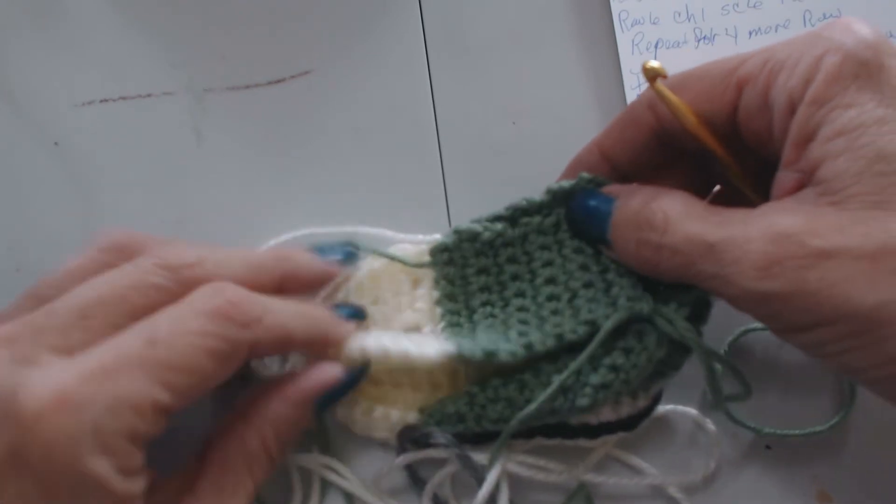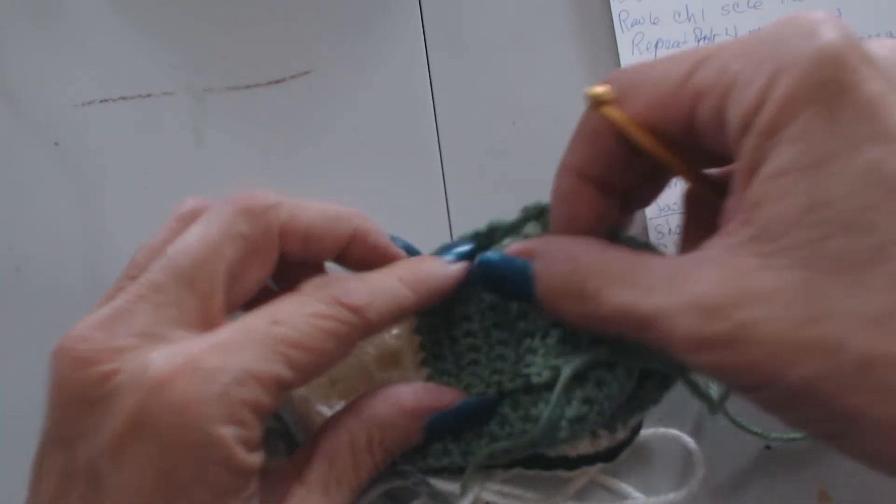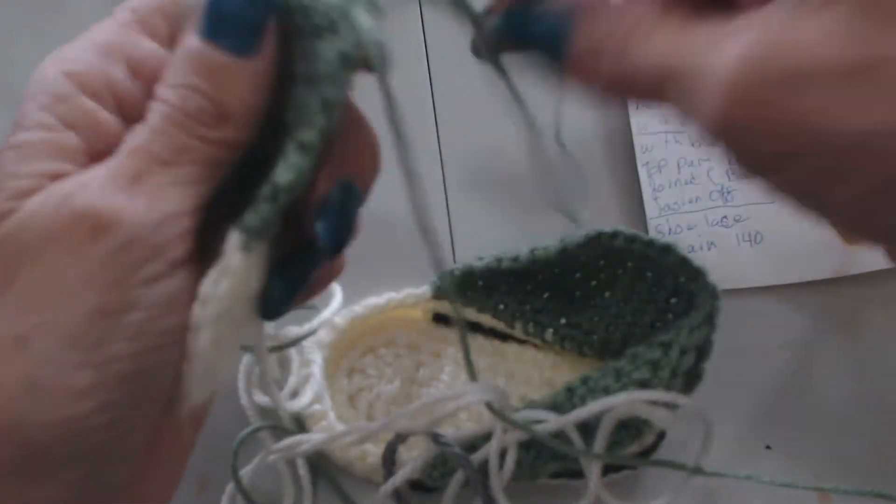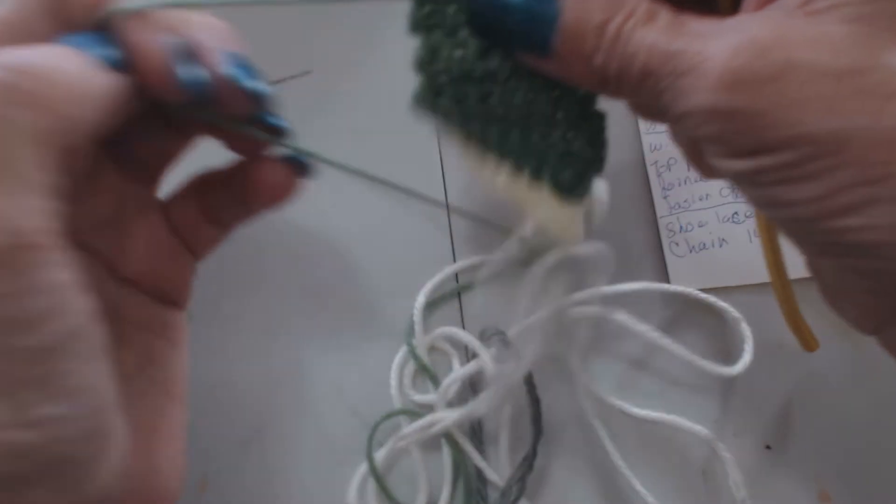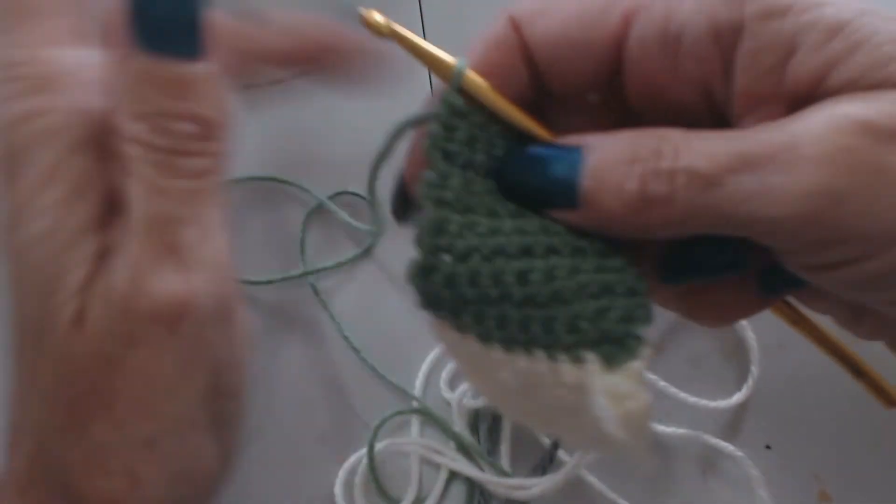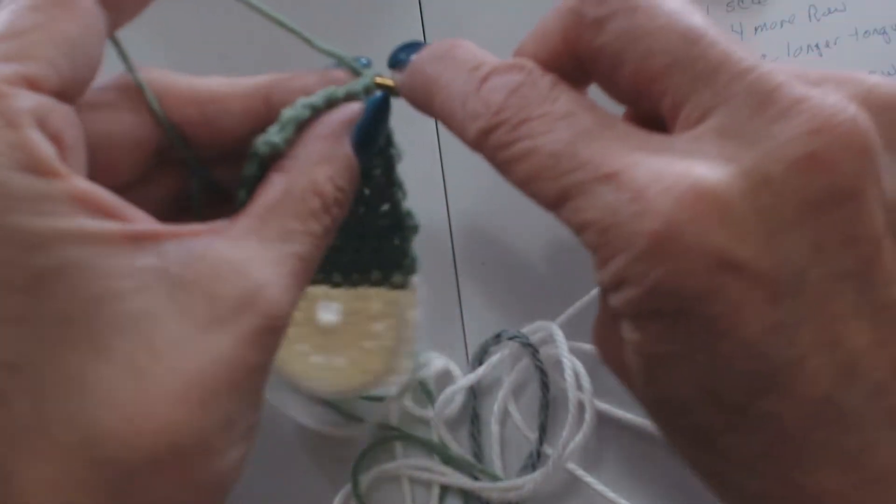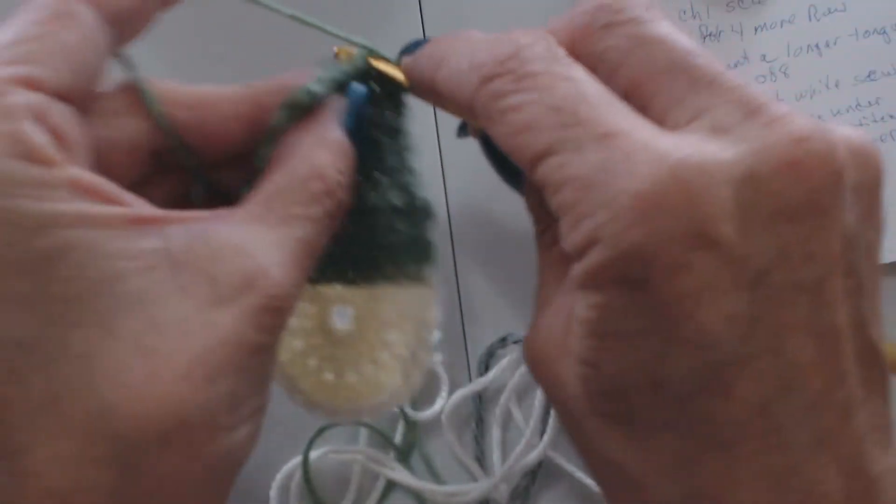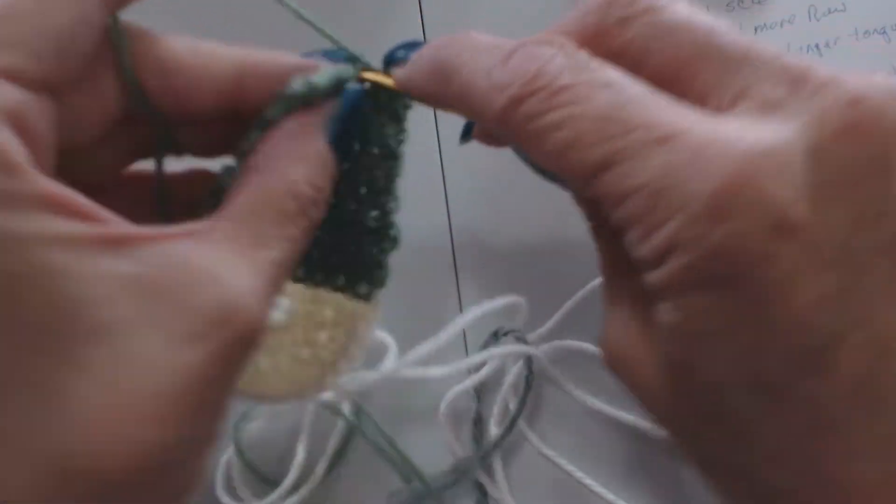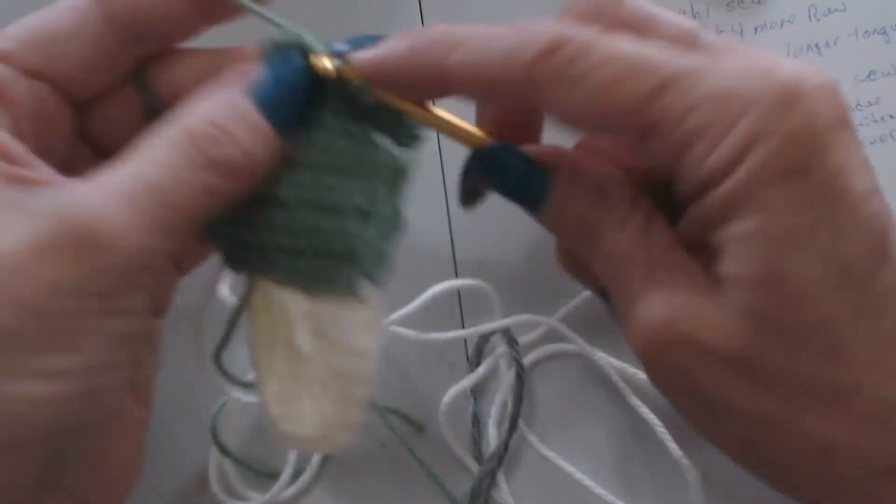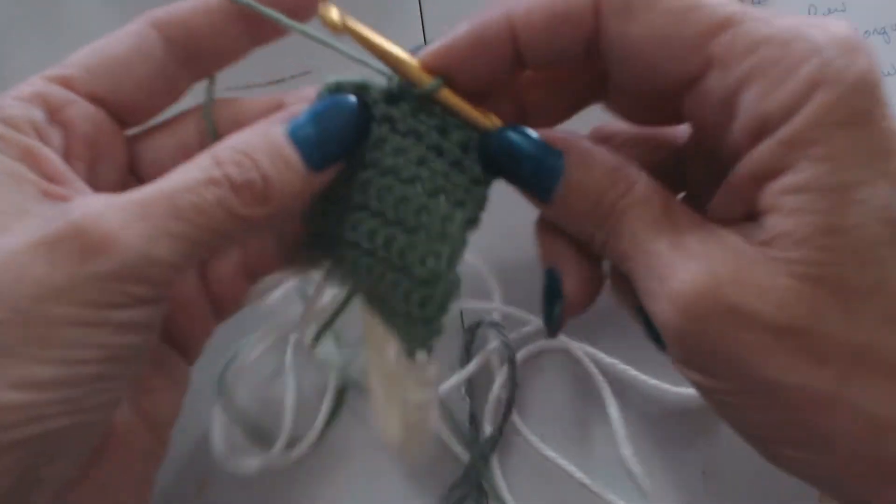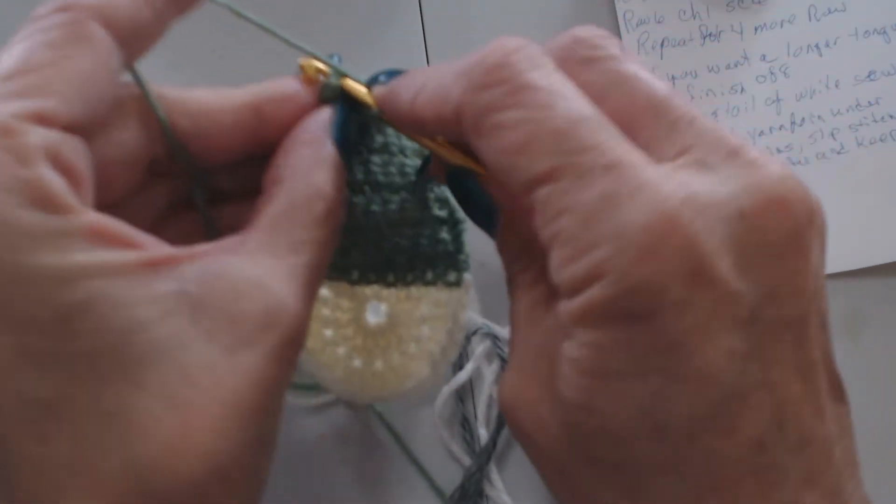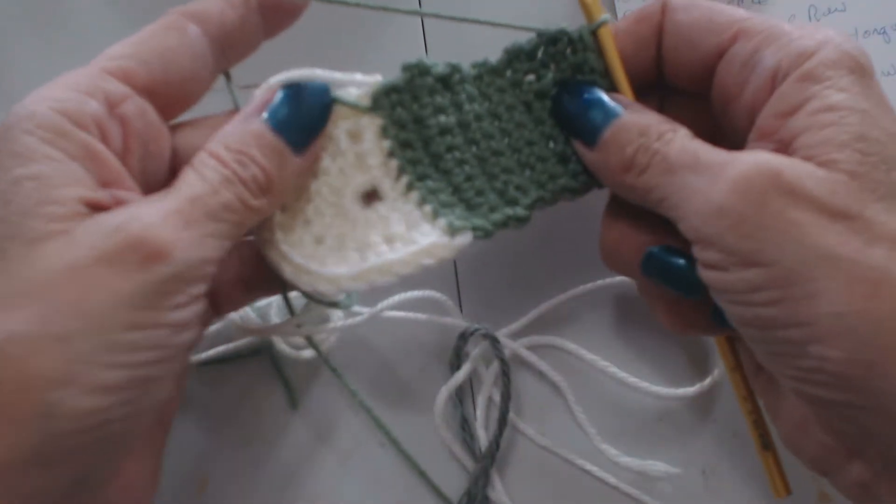Now some people would call that good, but I want another row or two on there because I want to make sure that that tongue is long enough. So I'm going to put another two rows on here. If you don't need to put two rows on and you think your tongue is long enough, then go ahead and fasten it off and hide your tail. And I'll be back once I get that done and fasten it off.